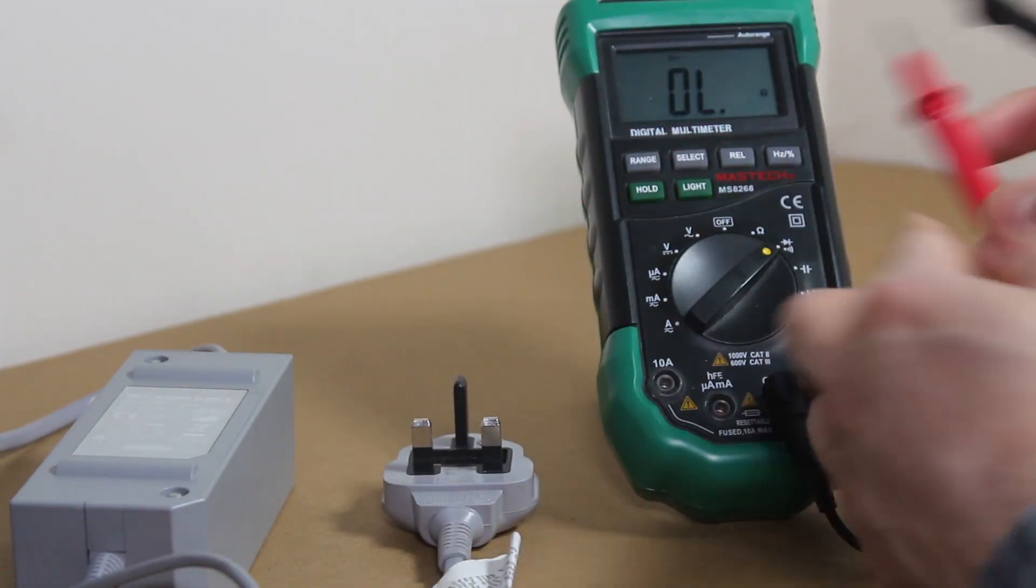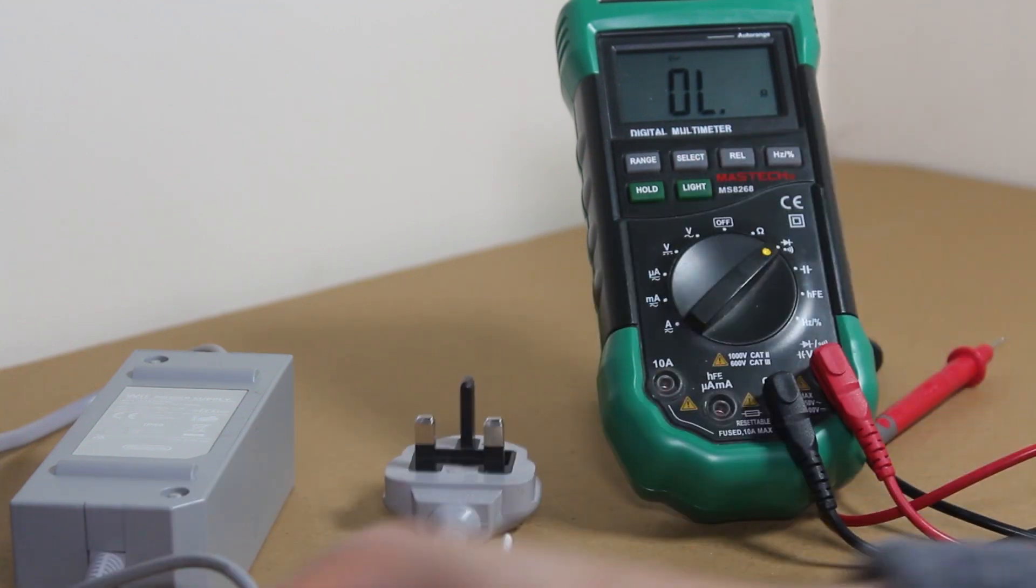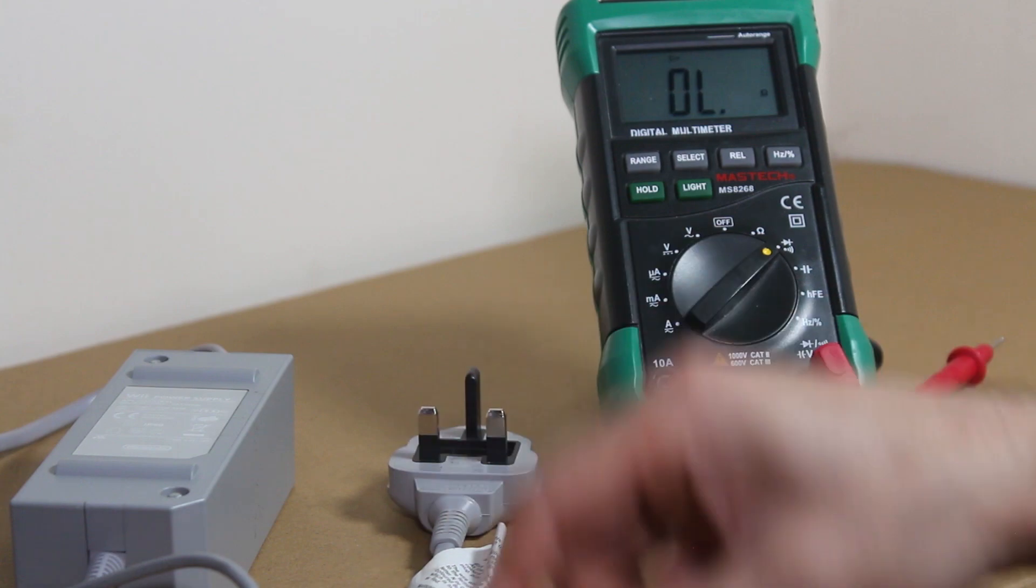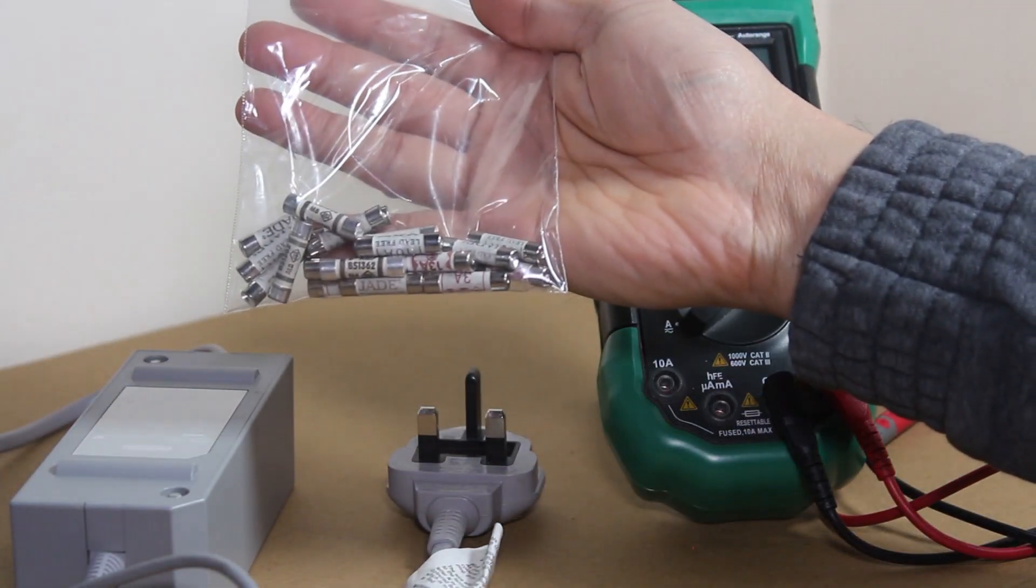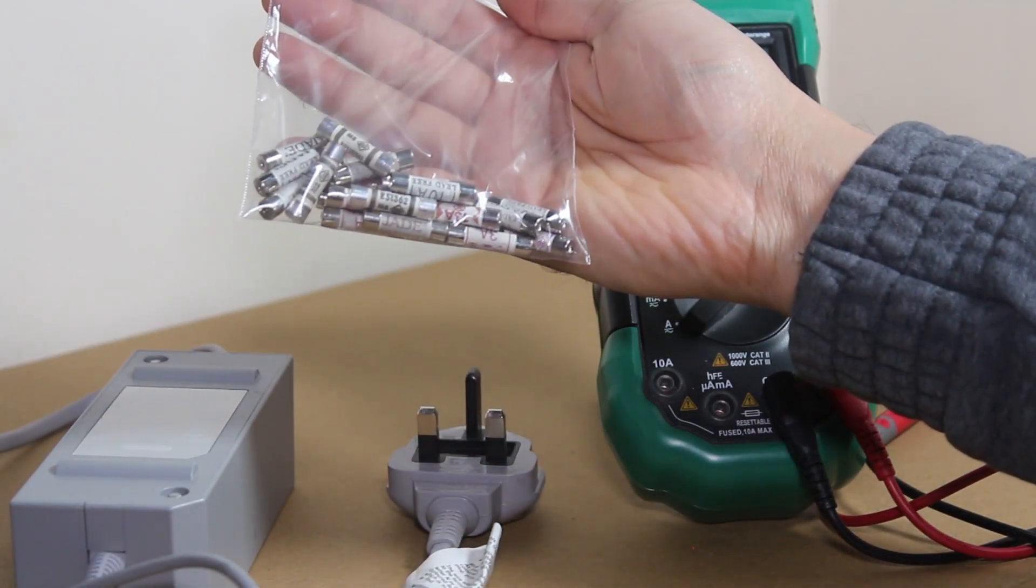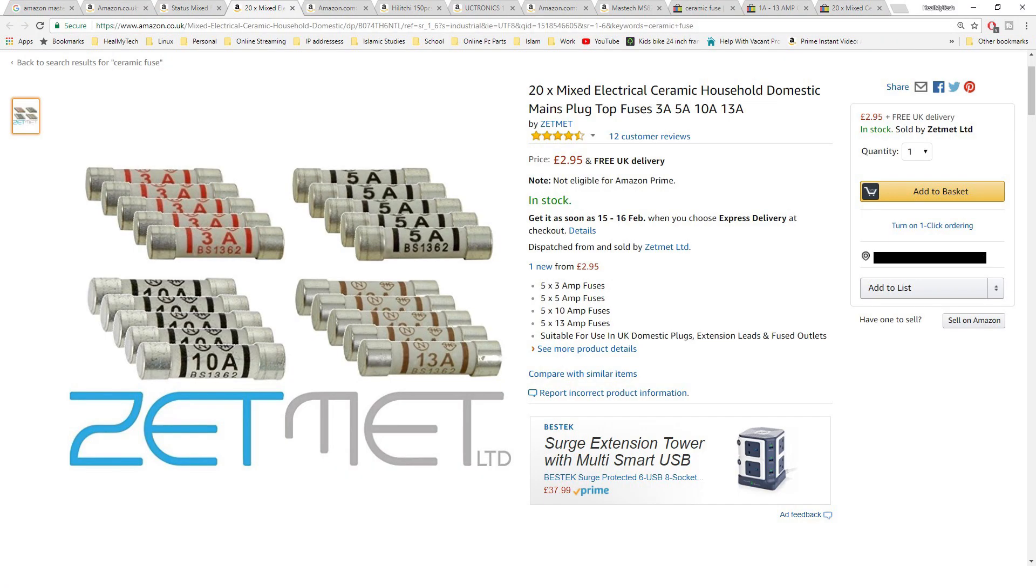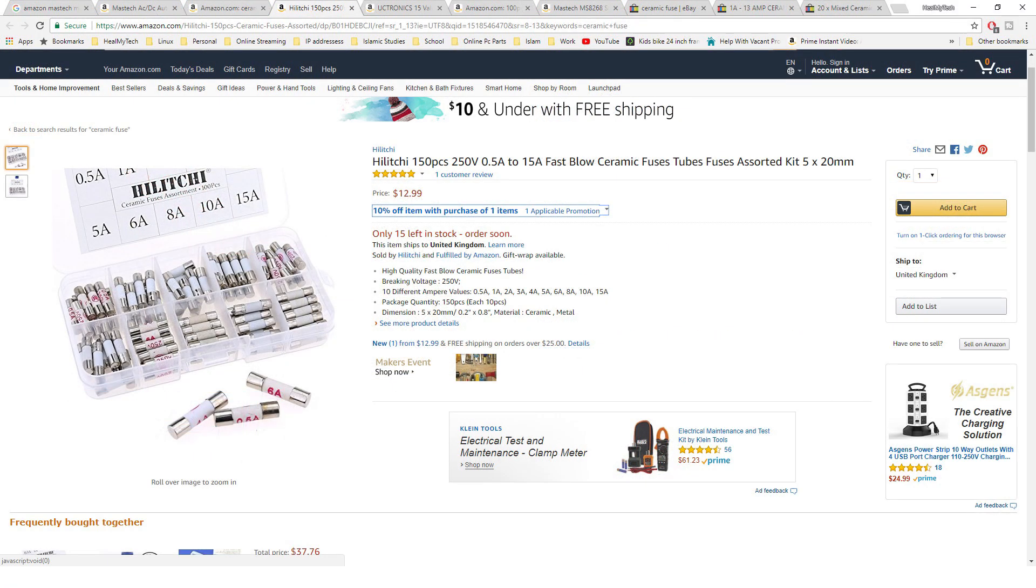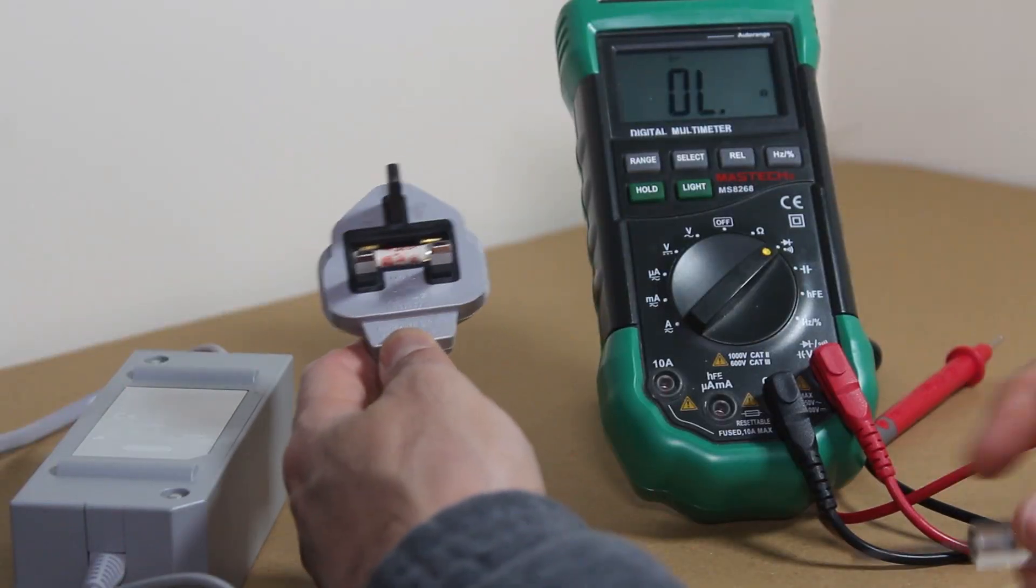So this is a three amp fuse. Make sure you grab yourself a working fuse. Now, this is a three amp. I've got myself a bag of these, various sizes. There is three, five, 10 and 13 amps. Always handy to have from eBay, from Amazon. I'll put a link below. You can just get yourself one of these. All you need to do, pop this one out.